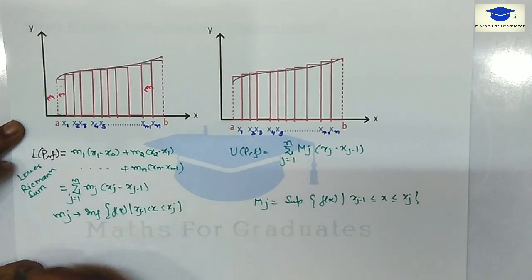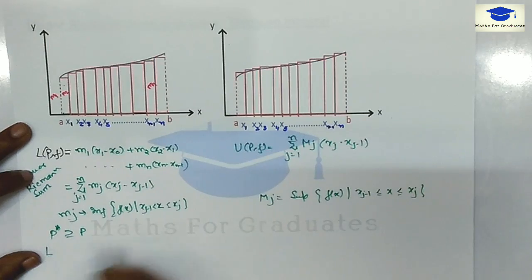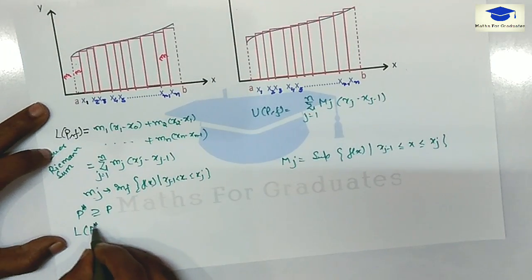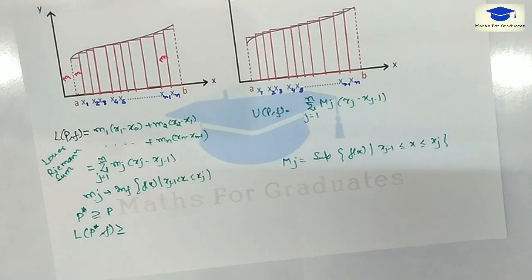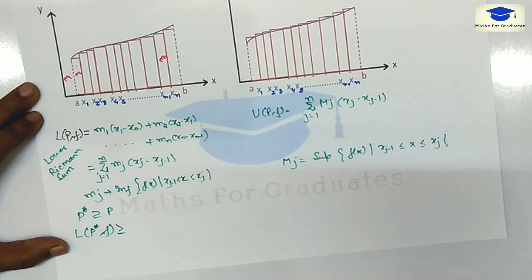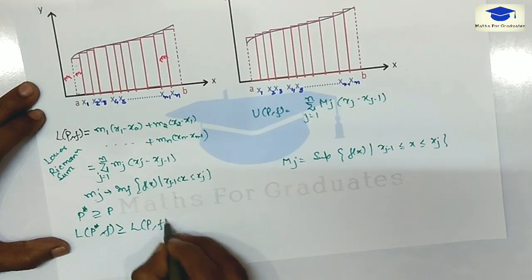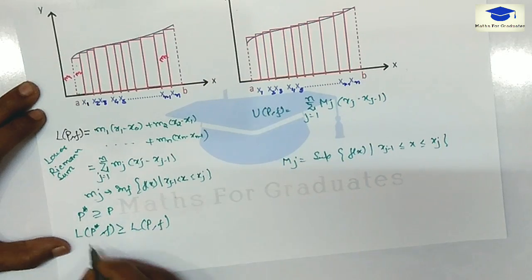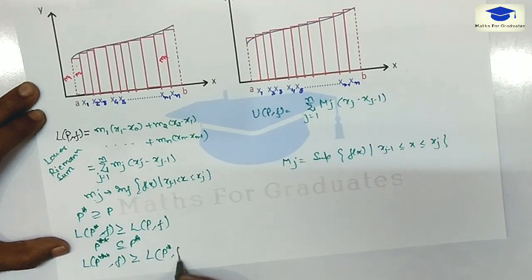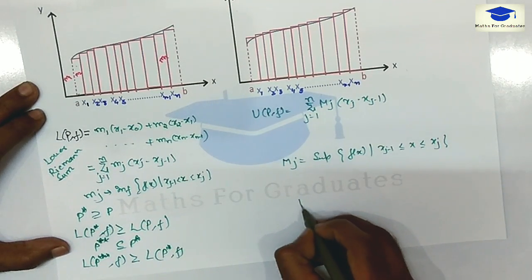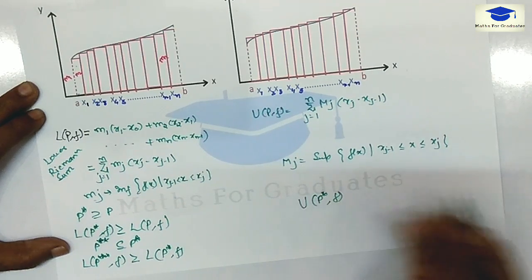As we can see, for every refinement — if P* is the refinement of P — then L(P*, f) is greater than L(P, f), meaning we get a better approximate area than before. The lower Riemann sum of the refinement is slightly greater than that of the previous partition. If P** is the refinement of P*, then L(P**, f) is slightly greater than L(P*, f). Similarly, for the upper Riemann sum, U(P*, f) will be lower than U(P, f).